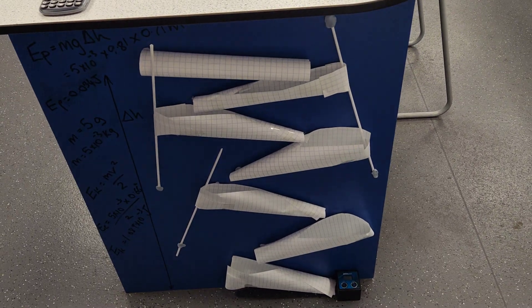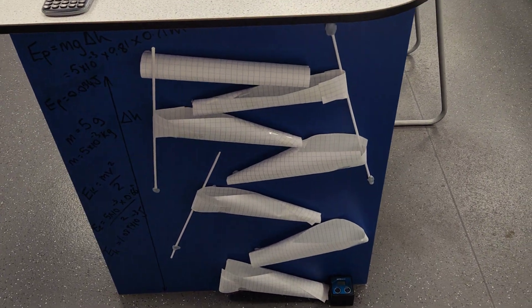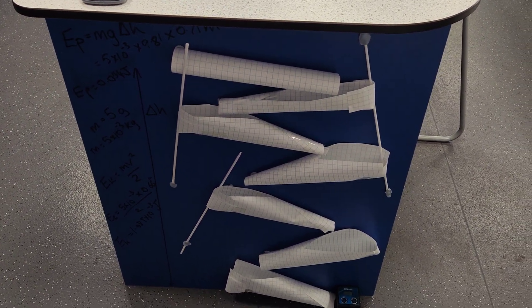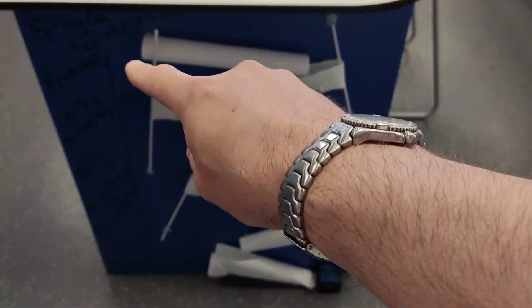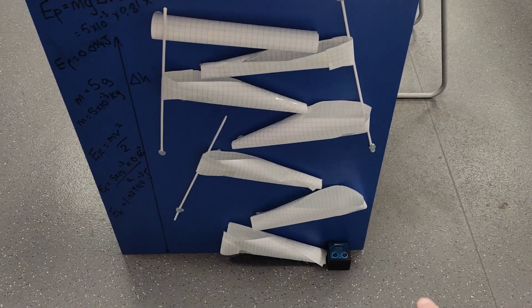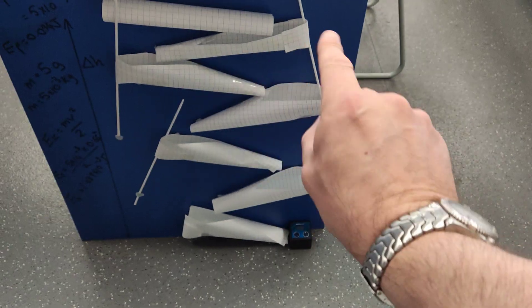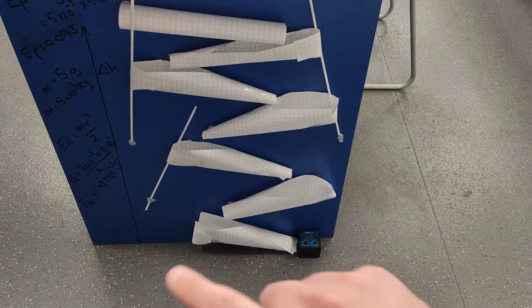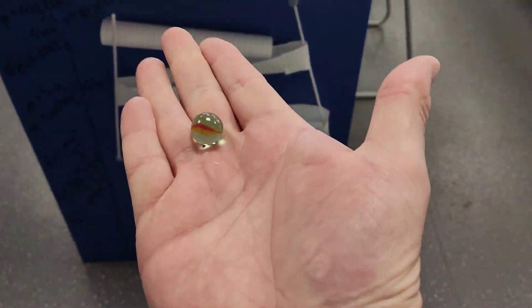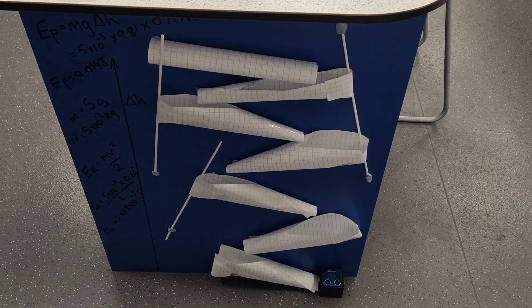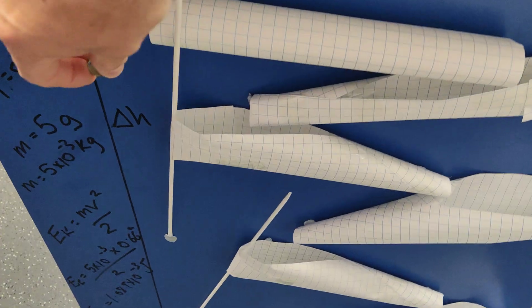We weren't just playing — we were actually trying to look at some cool physics. We were trying to look at how much energy we waste in friction. So if we worked out the potential energy at the top of the run, we know what the velocity is at the bottom from the light gate which measures velocity. If we let it fall and work out the mass of the ball, we can work out the height and the energy wasted in friction. Really simple.